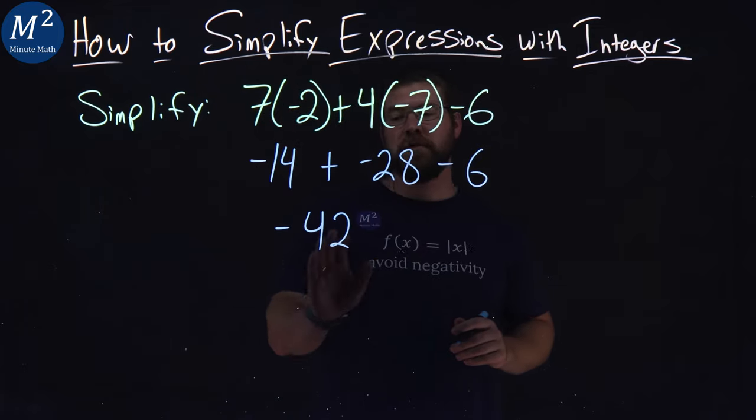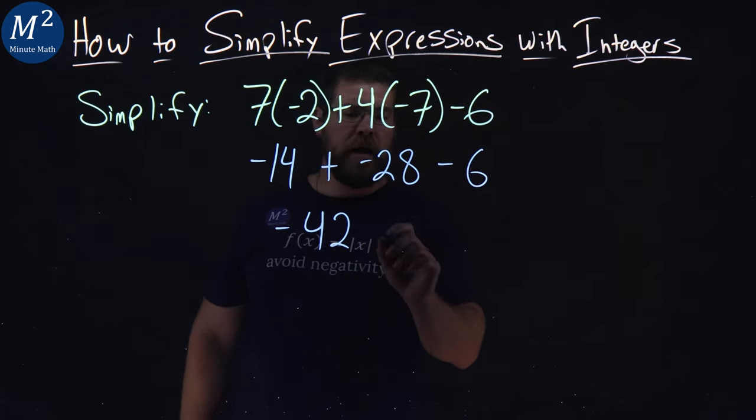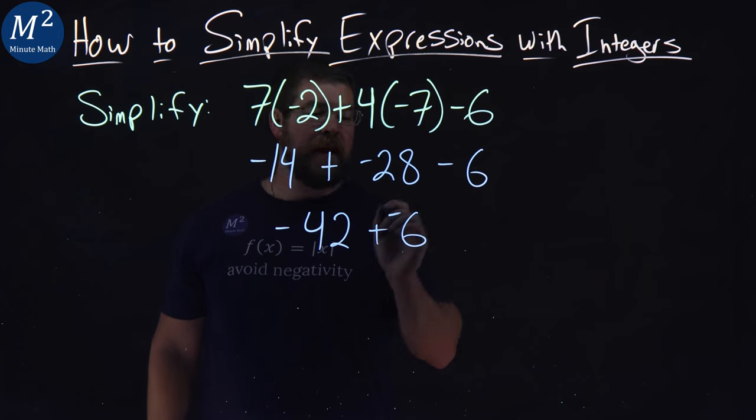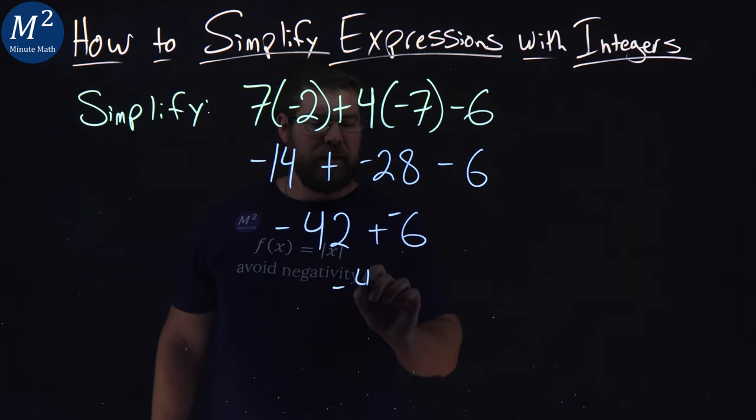Remember, they're both negative numbers, so we're going in the negative direction. Then we bring down the minus 6. Well, subtracting 6 is the same as adding negative 6. And so, negative 42 plus negative 6 is negative 48.